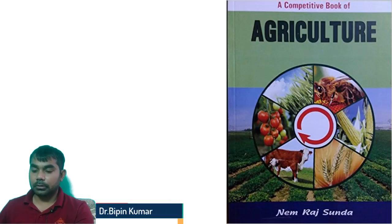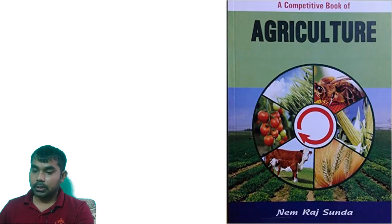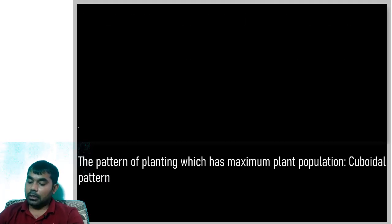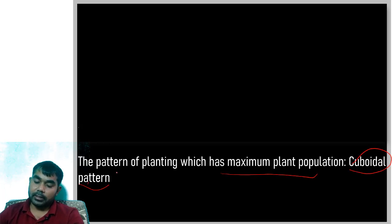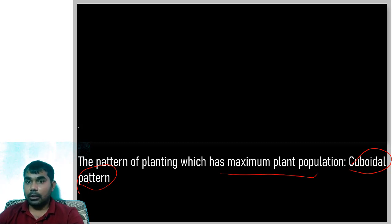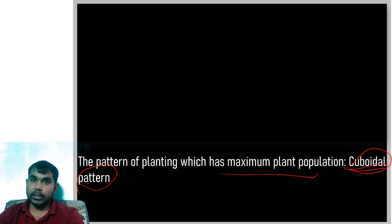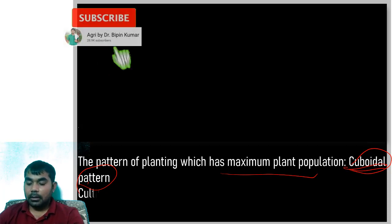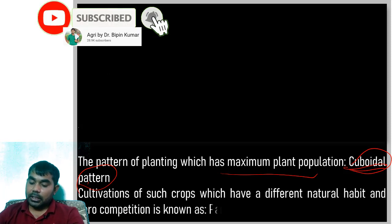Today in continuation of book reading, I will start with some facts related to agriculture. In a planting which has maximum plant population, the cuboid pattern is used. If you are doing orchard layout, the cuboid pattern gives you maximum plant population.